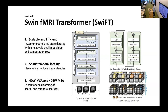Our 4D version of the window is defined for both spatial and temporal dimensions to focus on spatiotemporal brain dynamics. As you can see in the figure, the window is shifted over temporal and spatial dimensions to change the range of the windows, learning the relationship between distant brain regions over time and across spatial dimensions.